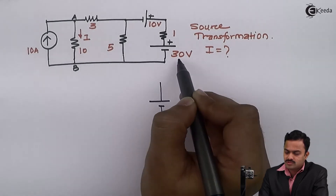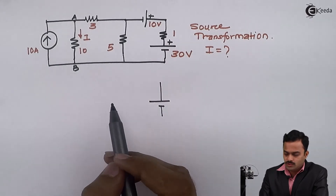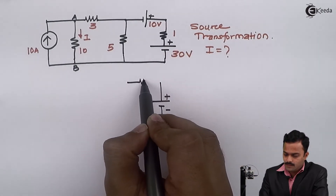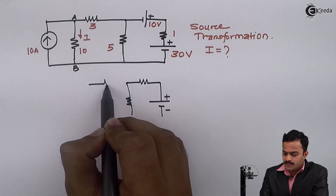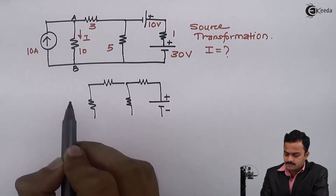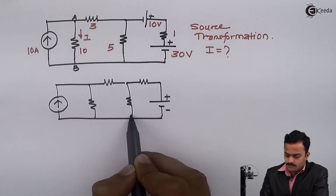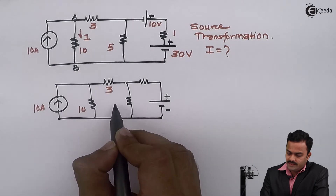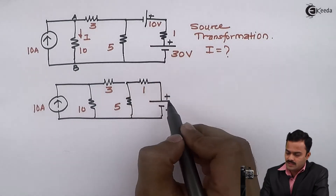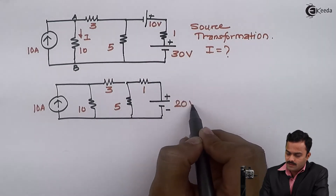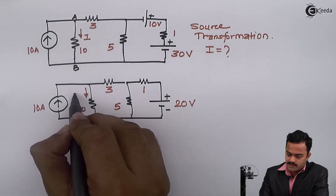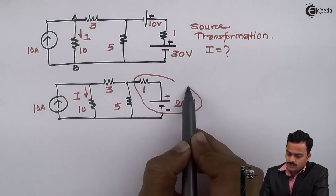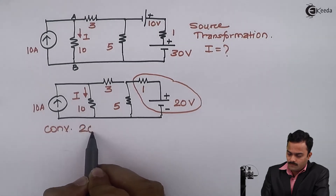Since they are in series opposition, I can subtract them. Since 30 is greater than 10, the equivalent voltage source is 30 minus 10 = 20 volt, with the same polarity as 30. The remaining part of the circuit stays as is: 10 ampere, 10 ohm, 3 ohm, 5 ohm, and 1 ohm will come in series with the 20 volt source. Our objective is to find current I.